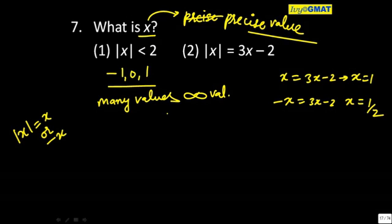Normally, this is how my mind will think now, and you are not wrong there. If x equals 1 and 1 by 2, there is no precise value. So I will try to combine it with the first statement and see mod of x is less than 2.